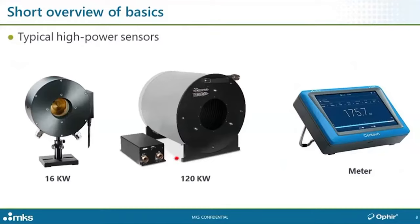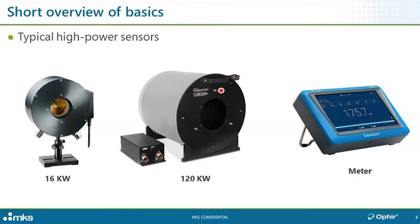Here you see a few examples of such sensors with water connectors — these sensors are generally water cooled. You can see the reflective cone in the aperture. This sensor is designed for up to 16 kilowatts. When it comes to showing actual examples of real devices, I'll be using Ophir devices since those are the ones I can talk about. Here's another sensor designed for measuring up to 120 kilowatts — that's not a mistake. It looks big; it's actually a desktop device, 50 centimeters by 50 centimeters.